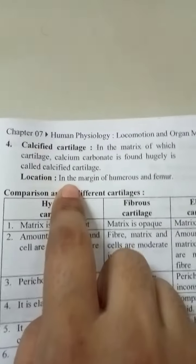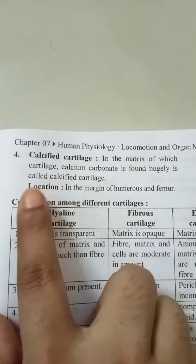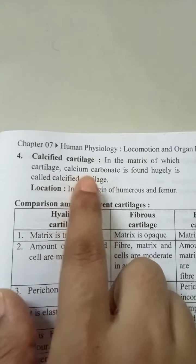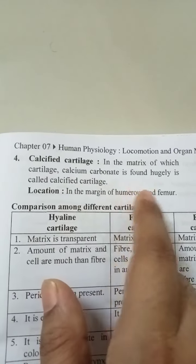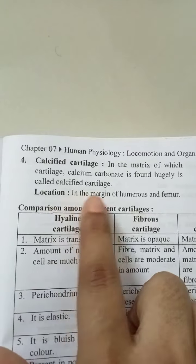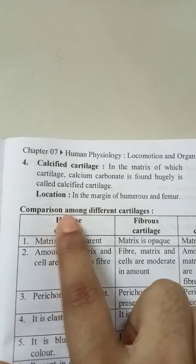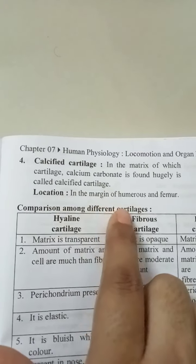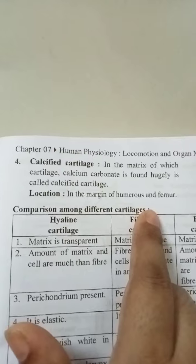Fourth: calcified cartilage. The cartilage in whose matrix calcium carbonate is found hugely is called calcified cartilage. It is located in the margin of the humerus and femur.